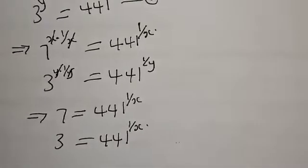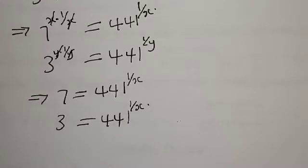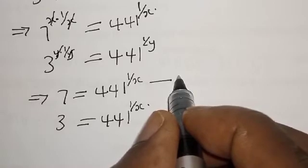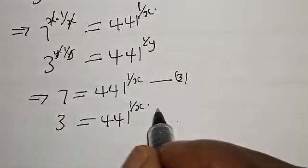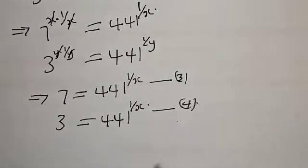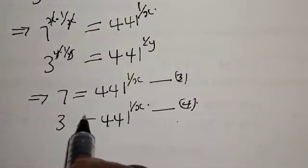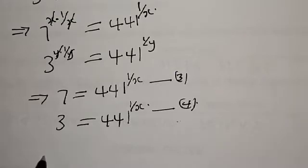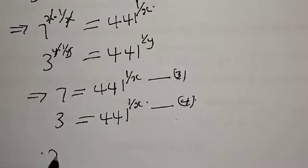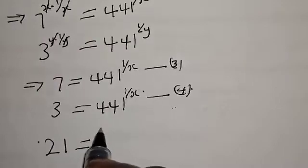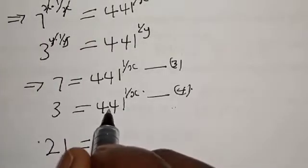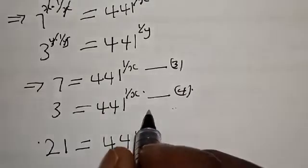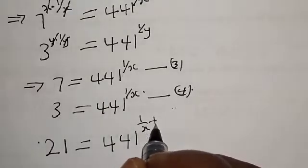Let's call these equation 3 and equation 4, then we multiply equations 3 and 4. Multiplying the left-hand sides first: 7 times 3 is 21, equal to 441 raised to power 1 over x plus 1 over y.